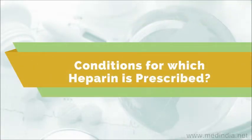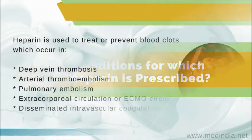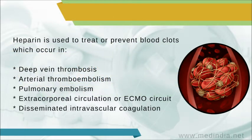Conditions for which heparin is prescribed: Heparin is used to treat or prevent blood clots which occur in deep vein thrombosis, arterial thromboembolism, pulmonary embolism, extracorporeal circulation or ECMO circuit, and disseminated intravascular coagulation.